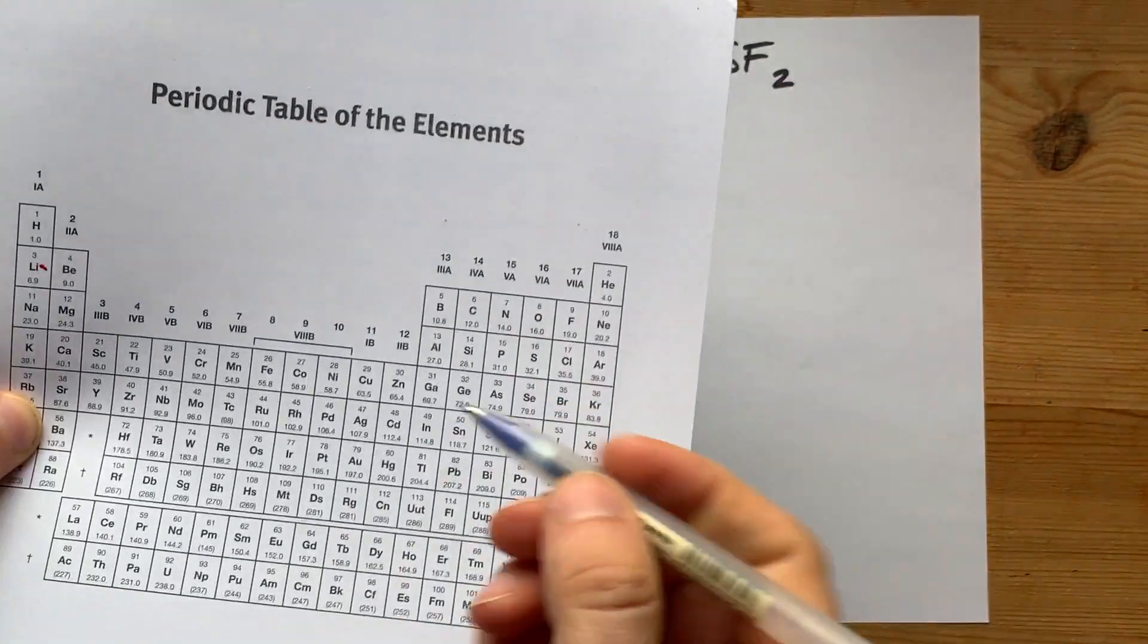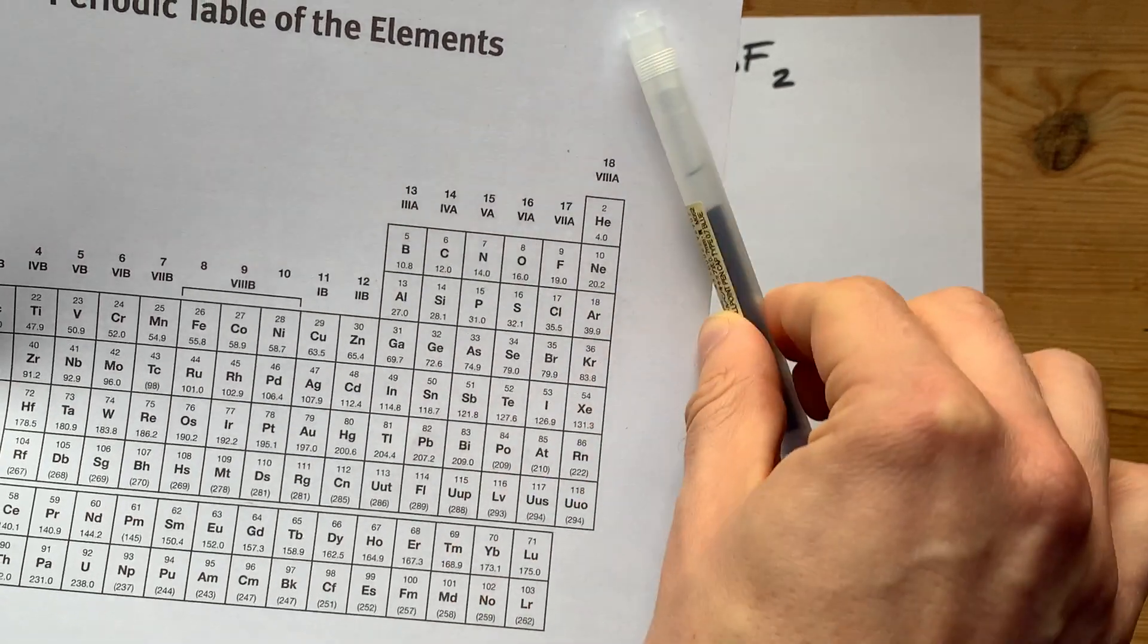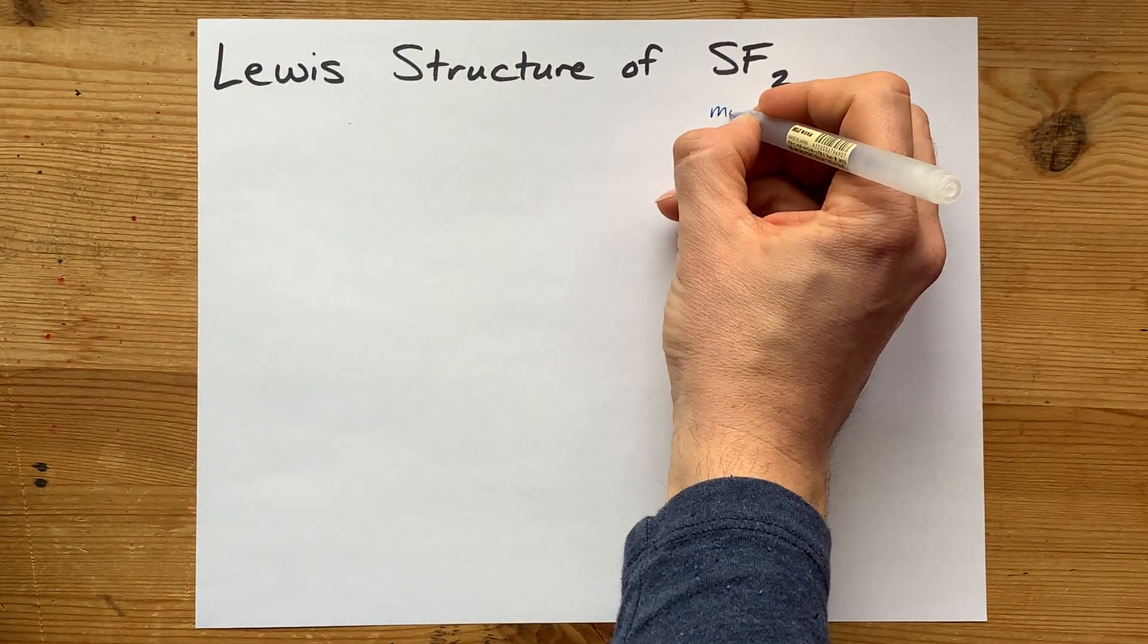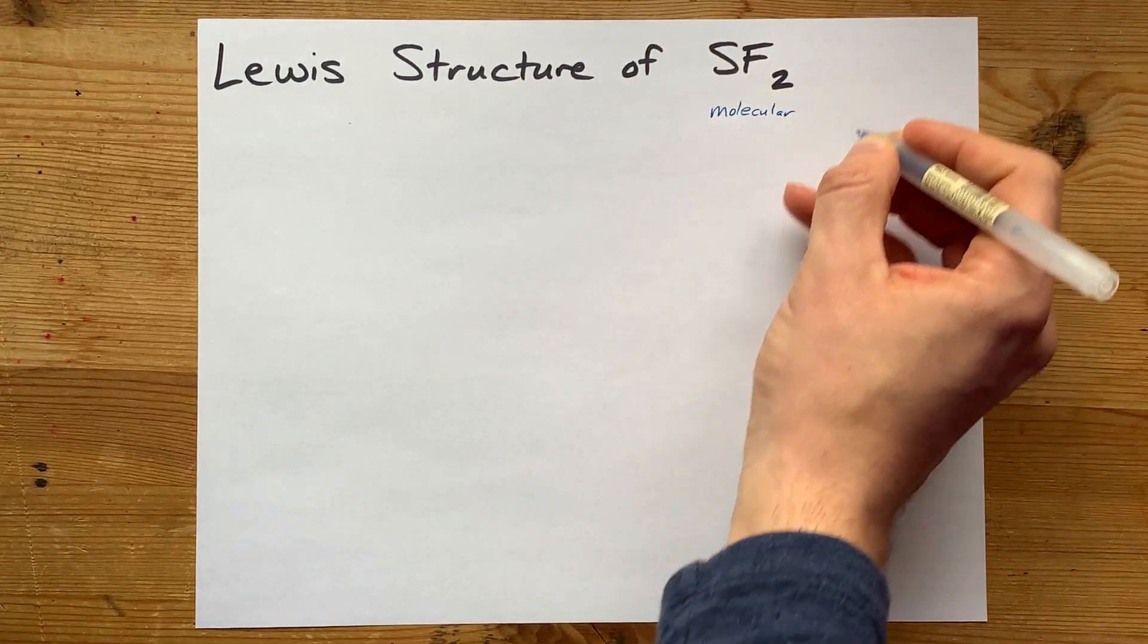The first thing to note is that sulfur and fluorine are in the upper right-hand portion of the periodic table. They're both non-metals, and that means when they bond together, they'll form a molecular compound.